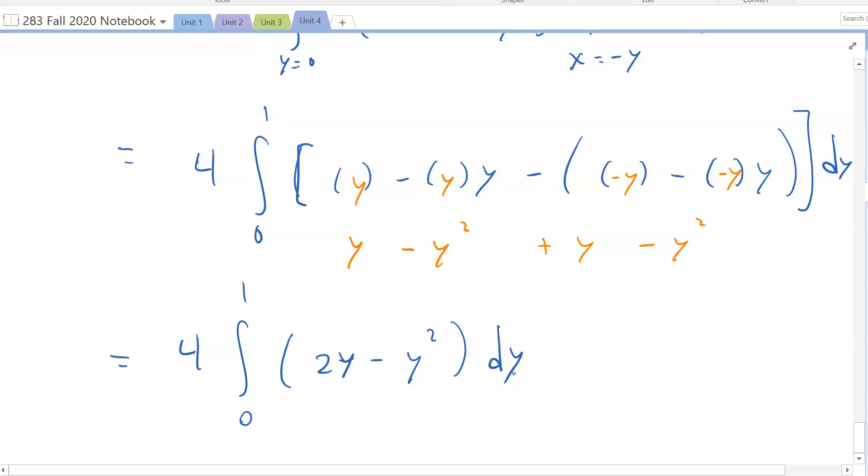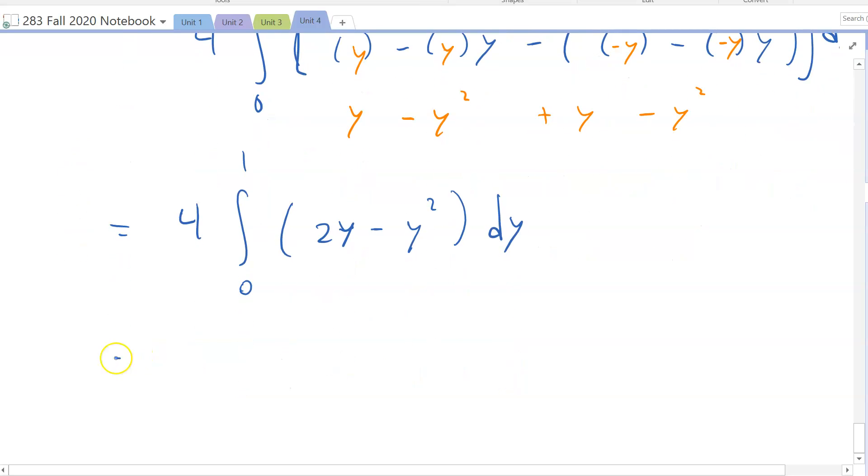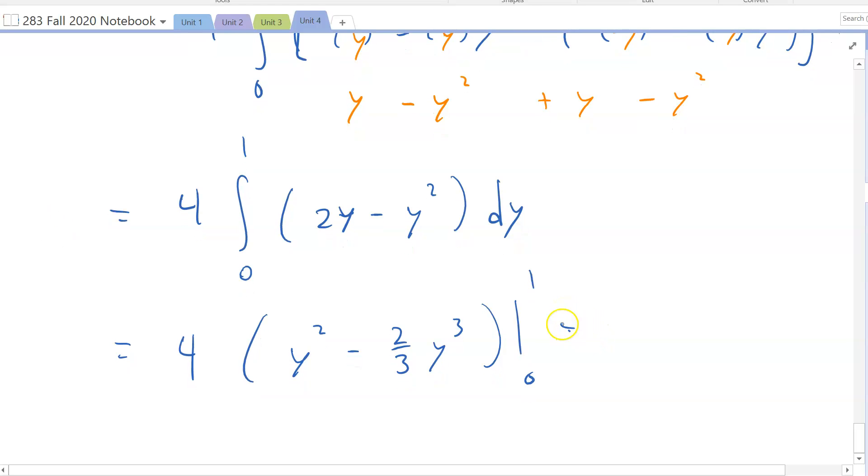What's our antiderivative here? The 4 is coming along for the ride. Our antiderivative term by term is y squared minus two thirds y cubed. Now we're going to simply plug in 1, plug in 0, and subtract. What is that going to yield for us? We're going to get 4, and then it'll be 1 minus 2 thirds. When we plug in 0, we get 0 everywhere, so that contributes nothing to subtract off. You can simply see here we get 4 times 1 third, which comes out to 4 thirds.